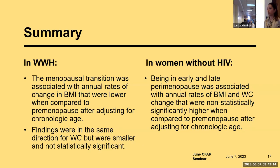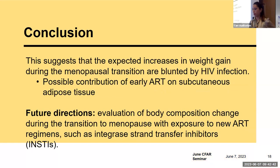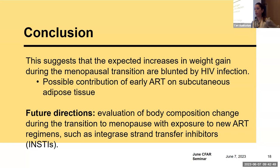In summary, in women with HIV, the menopausal transition was associated with annual rates of change in BMI that were lower compared to premenopause after adjustment for chronologic age. Findings were in the same direction for waist circumference but were smaller and not statistically significant. In women without HIV, being in late and early perimenopause was associated with non-statistically significantly higher annual rates of BMI and waist circumference change compared to premenopause. In conclusion, this suggests that expected increases in weight gain during the menopausal transition are blunted by HIV infection, begging the question of a possible contribution of early ART on subcutaneous adipose tissue. Future directions include evaluating body composition change with exposure to newer antiretroviral regimens such as integrase strand transfer inhibitors.